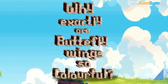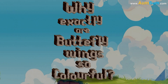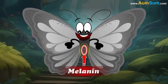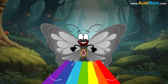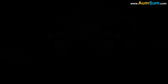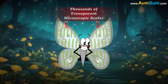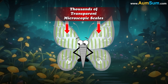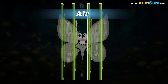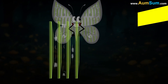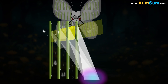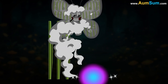Why exactly are butterfly wings so colorful? Firstly, butterflies get their color from chemical pigments such as melanin, which absorbs certain wavelengths of light while reflecting others. Secondly, butterfly wings are made up of thousands of transparent microscopic scales, and each scale has multiple layers separated by air. When light passes through these scales, it is reflected multiple times. These reflections compound one another and intensify the colors.